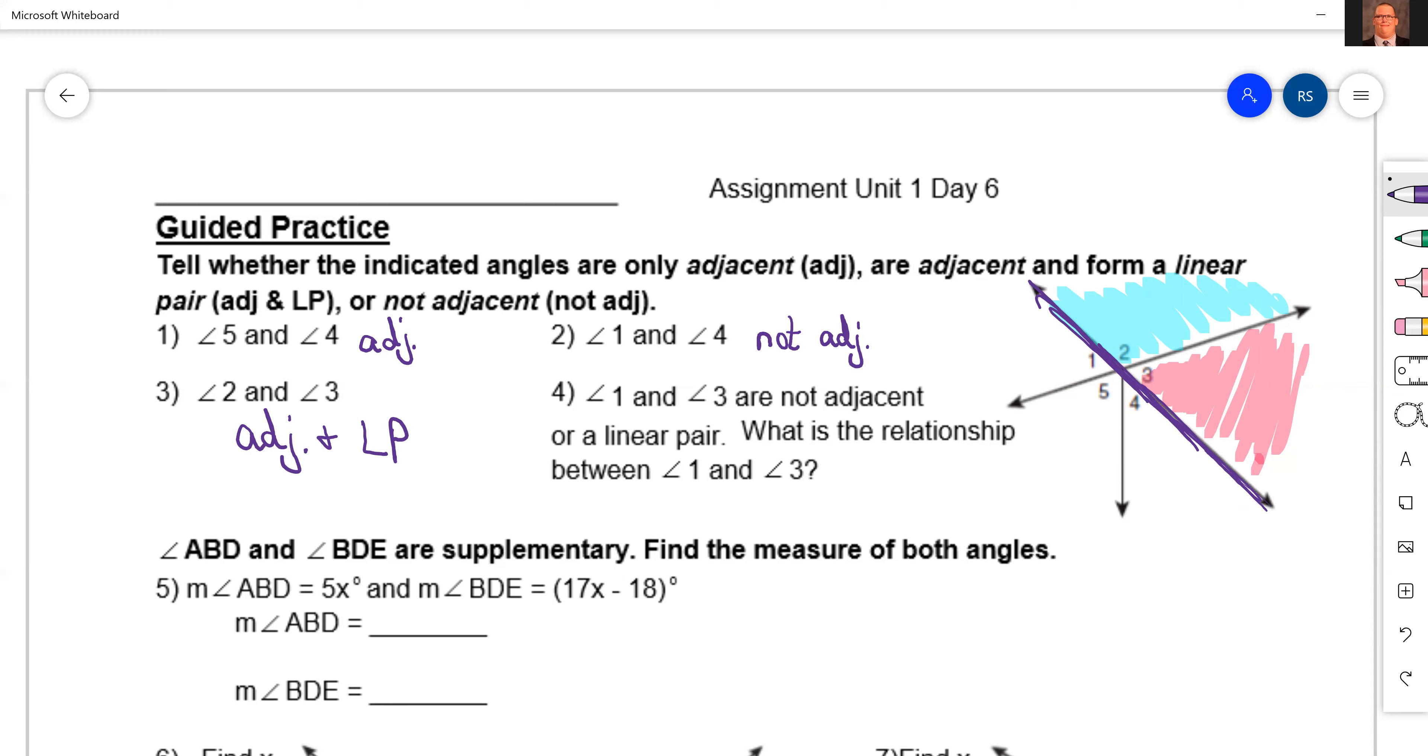Now for number four, number four actually tells us that angles one and three are not adjacent, so it kind of gives us a little hint there. It says one and three aren't adjacent, we know that. But do they have a special relationship?